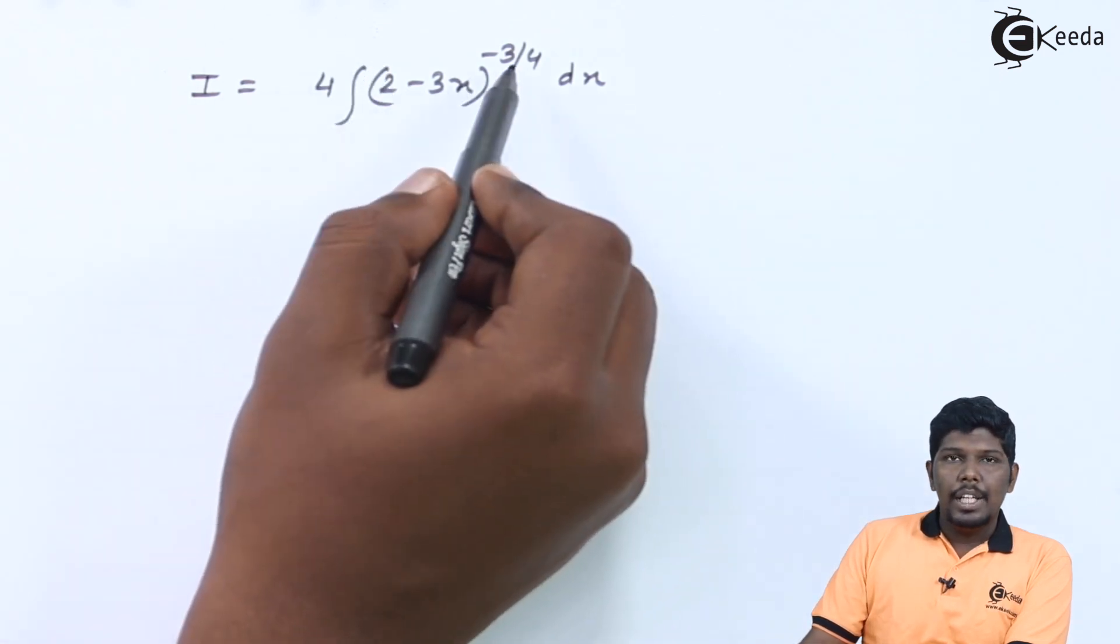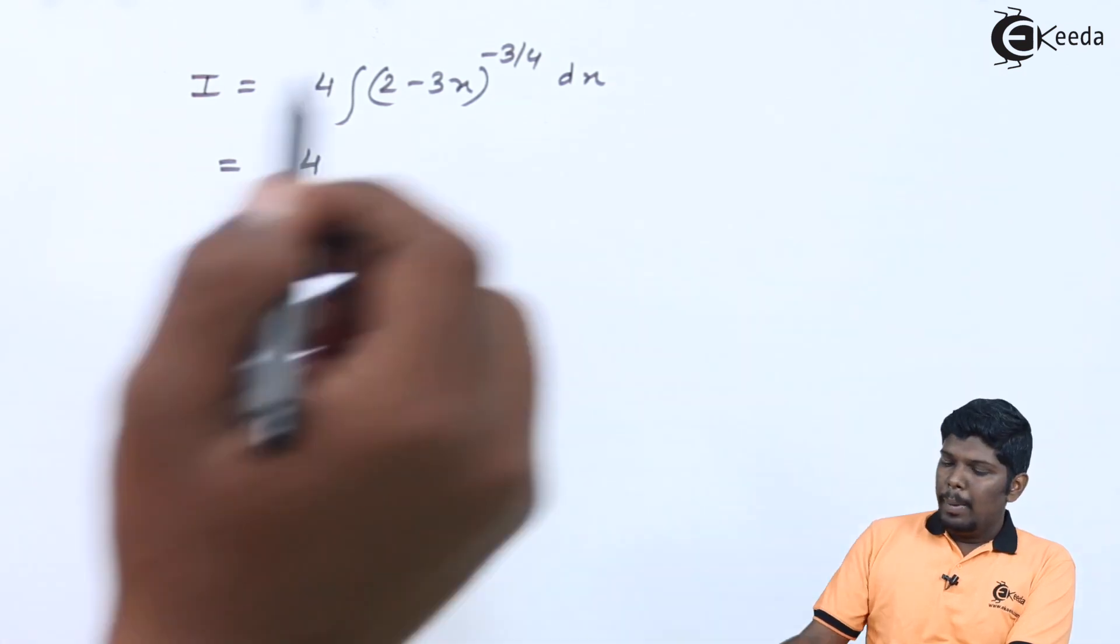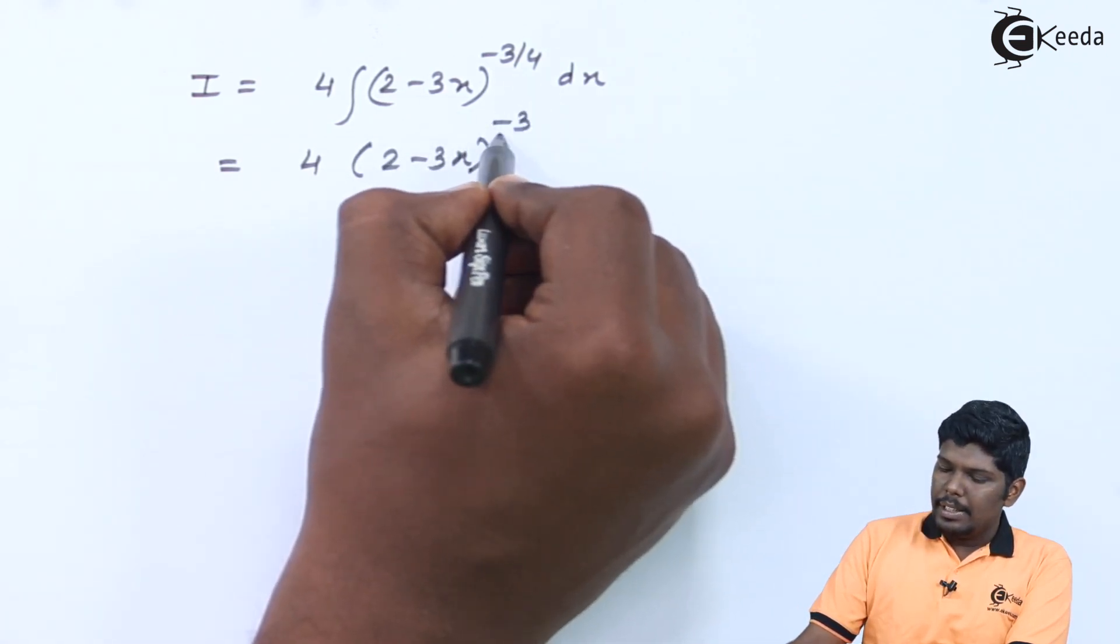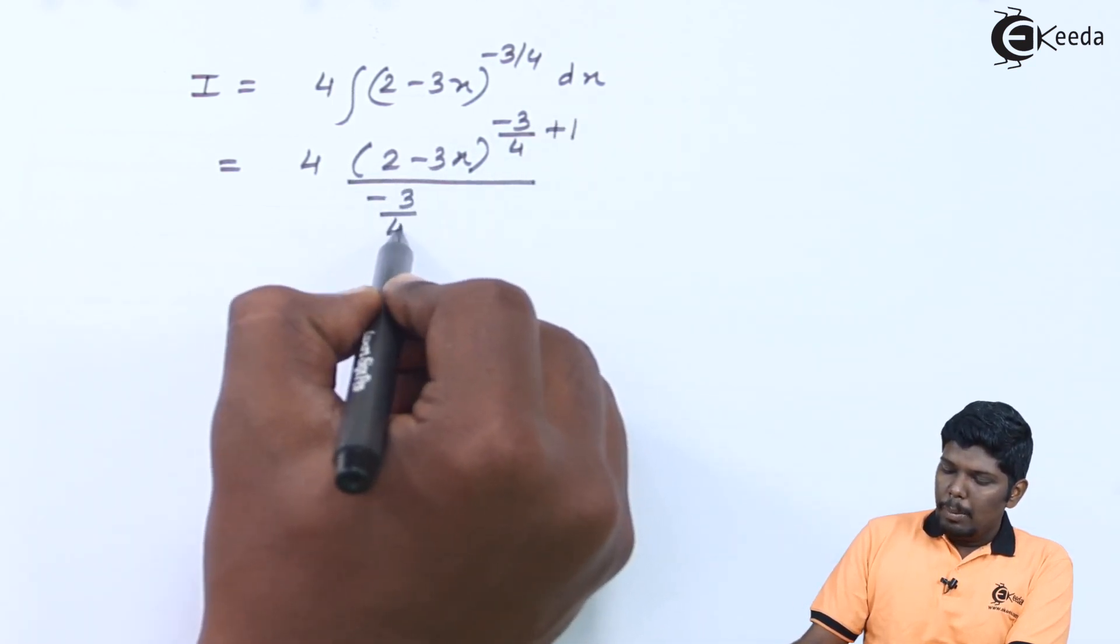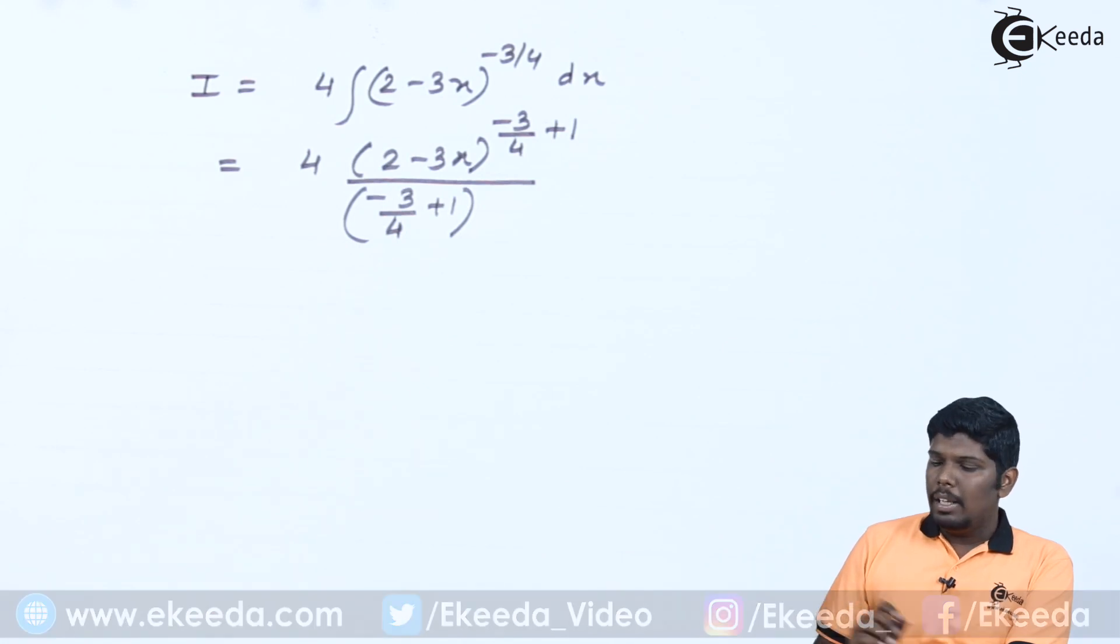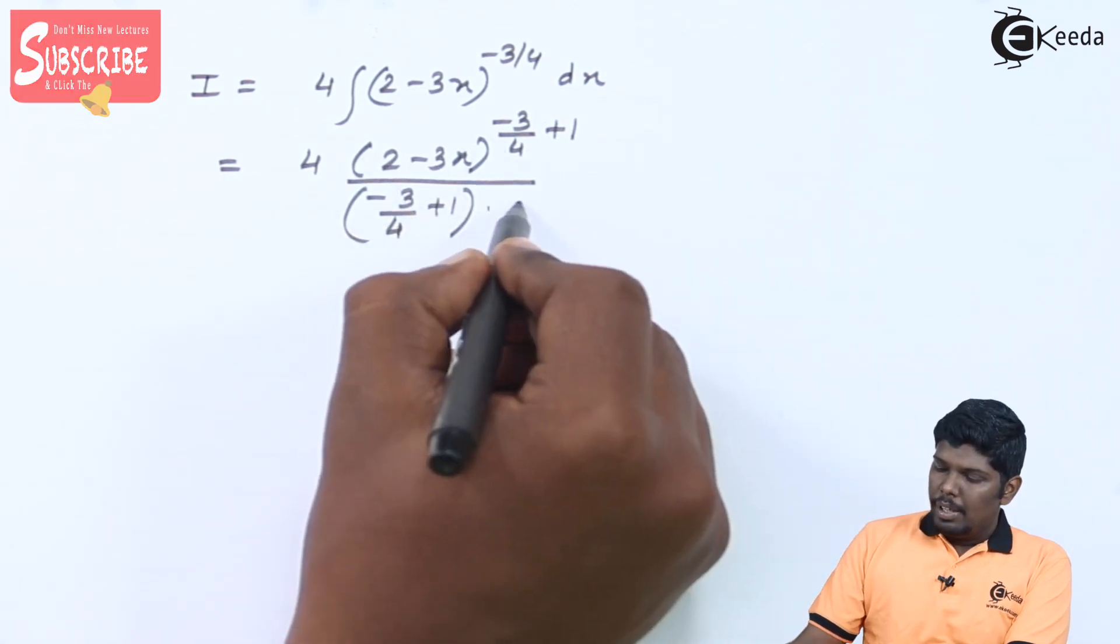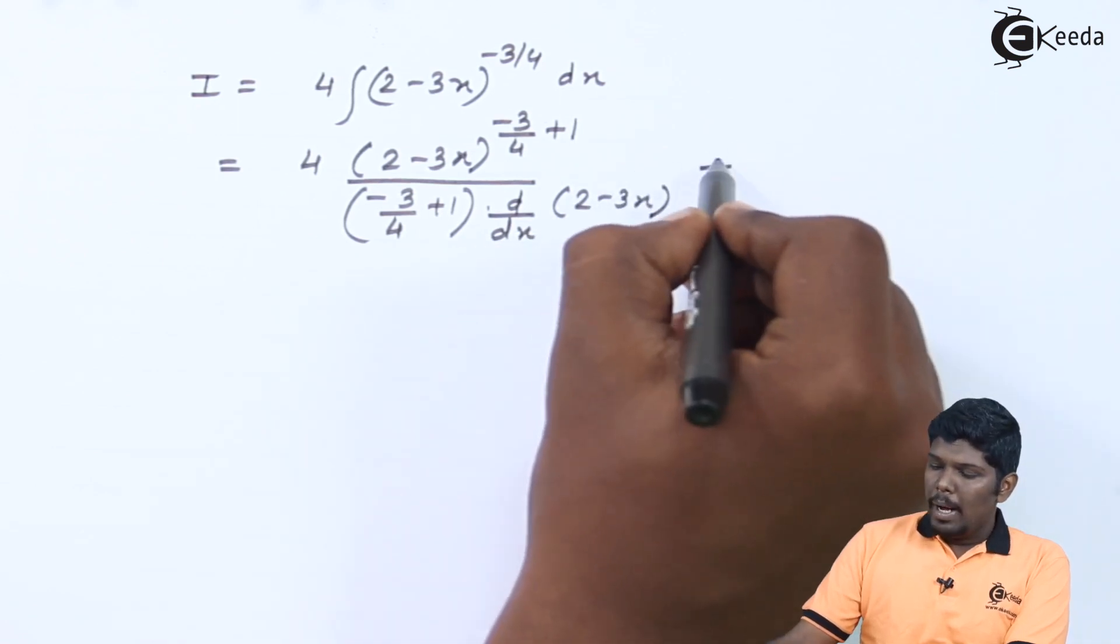Comparing the given function with x raised to n, we know that integration of x raised to n is x raised to n+1 upon n+1. Repeating the same formula, we have (2-3x) raised to n+1, that is -3/4+1, divided by -3/4+1. Now the next rule of composite function says divide by the derivative of the function which is replacing x. I will compare this function with x raised to n. We know very well that x is replaced by 2-3x, therefore we will divide by its derivative, d/dx of (2-3x), followed by +C.